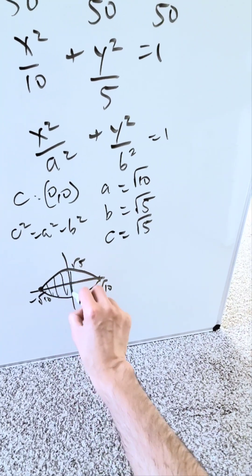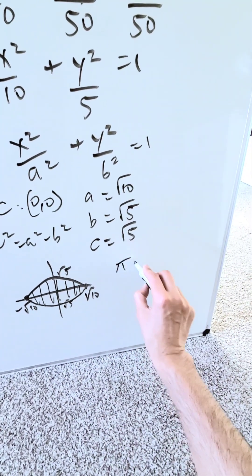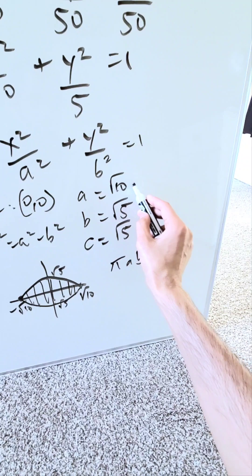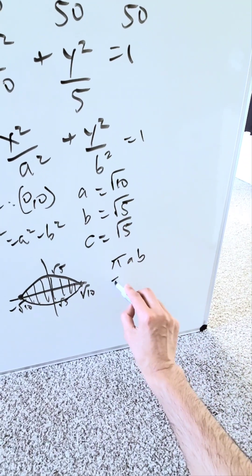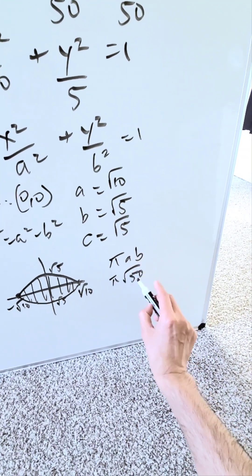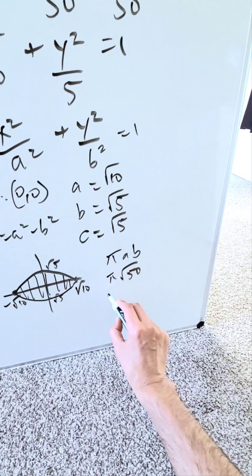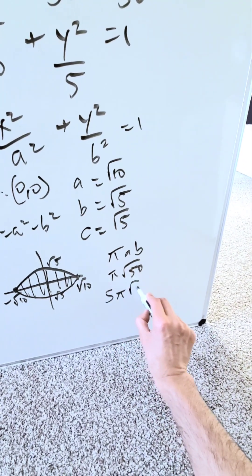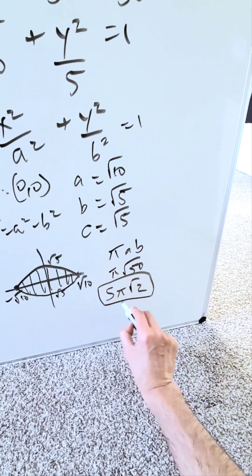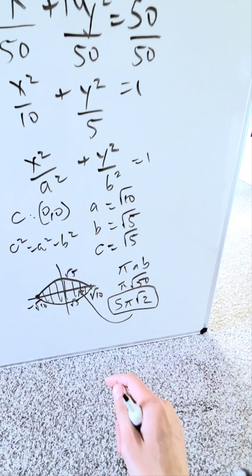But in terms of the area, what do we have? Area here is equal to pi ab. I'll do root 10 times root 5 times pi. It'll be pi root 50. Simplify this. 25 times 2 will have here 5 pi root 2. This here will be the area of this system that we have, an ellipse.